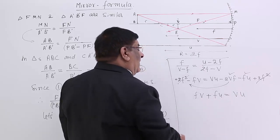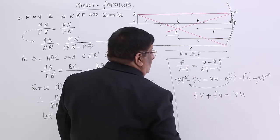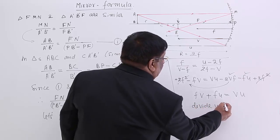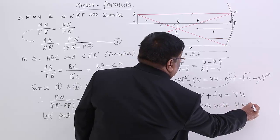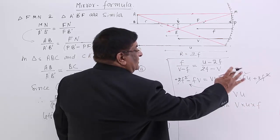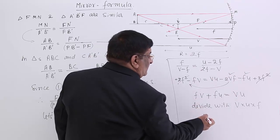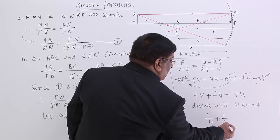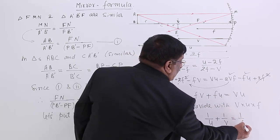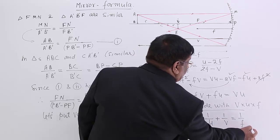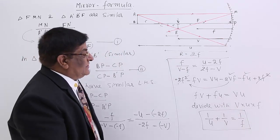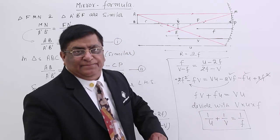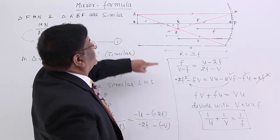Now we get this relation between V, U and F, but it does not look good. So we make a simplification: we divide this relation by V × U × F — all three. So this gives: 1/U + 1/V = 1/F. We get this relation between U, V and F, which is a very simple and clear-cut relation. This is known as the Mirror Formula.